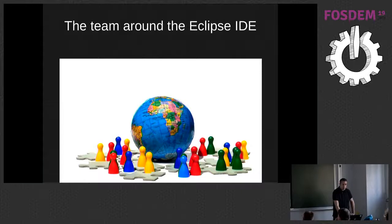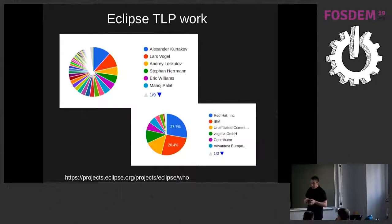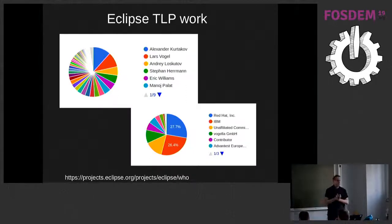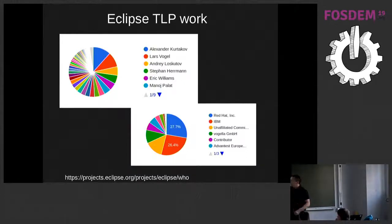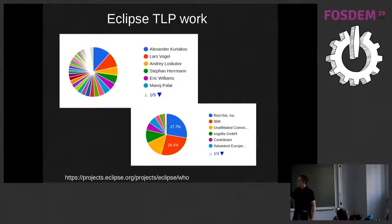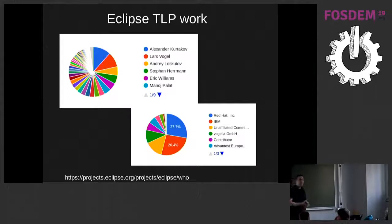This talk is only about the Eclipse desktop IDE. We have what we call the top-level project, which is a narrow scope of an IDE for Java development, Eclipse development, and related tooling. This is a statistic from the last three months of activities within only the top-level project. I like to show this commit graph because it shows how healthy the Eclipse project is.